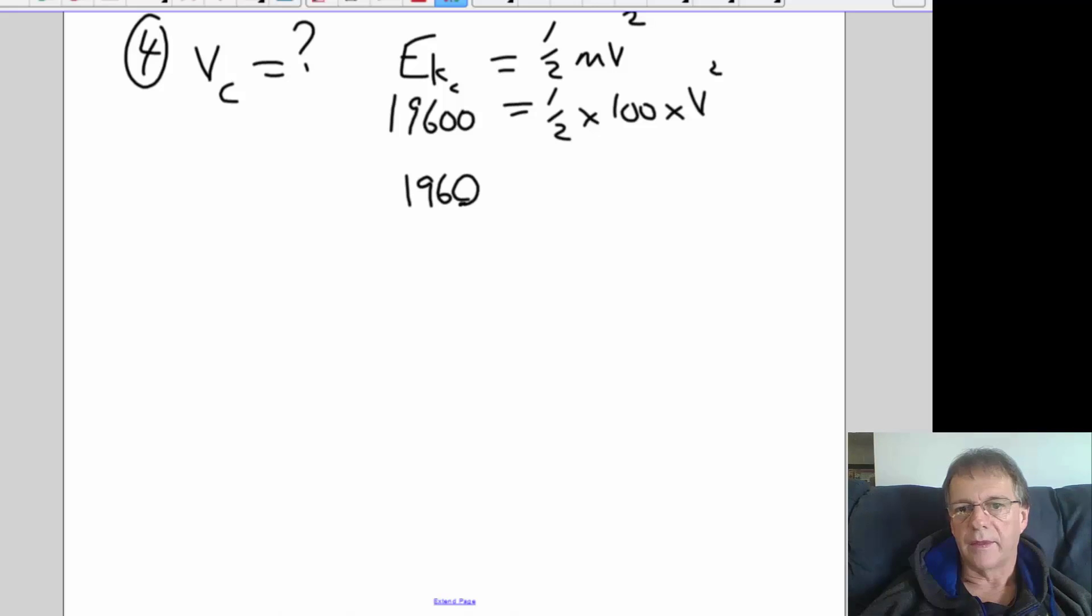So looking at that there, 19,600 joules divided by 50 gives you v², so obviously v is the square root of that number. So 19,600 divided by 50 is 392, and the square root of 392 is 19.8 meters per second.